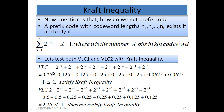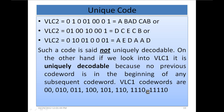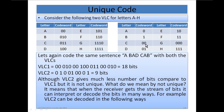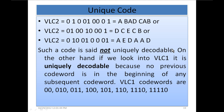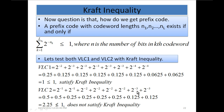If we calculate it, the result is 1. So VLC1, which encodes 'a bad cab' using 18 bits, satisfies the Kraft inequality. Now let's examine VLC2: 2^(-1) + 2^(-1) + 2^(-2) + 2^(-2) + 2^(-2) + 2^(-2) + 2^(-3) + 2^(-3). If we calculate this, we get 2.25, which is not less than or equal to 1, so VLC2 does not satisfy the Kraft inequality.